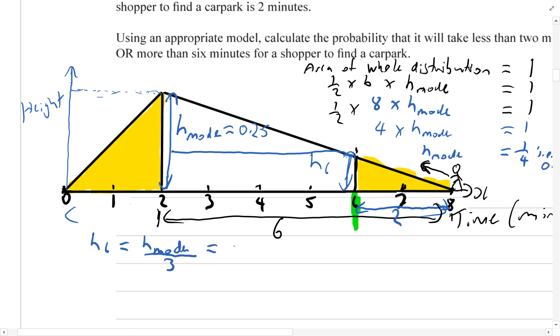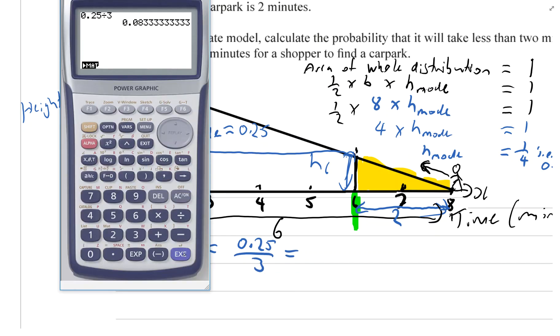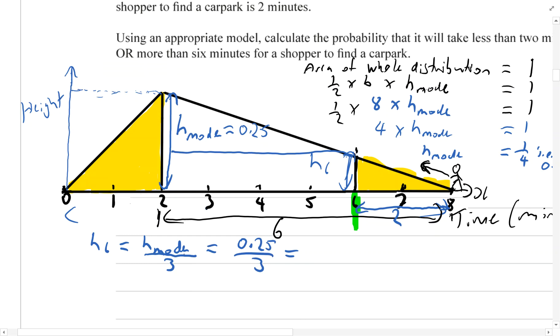So we must be a third of the way to the peak at that point. So the height at six is just going to be the height at the mode divided by three. So the height at the mode is 0.25. And if we divide that by three, we get 0.083 recurring.